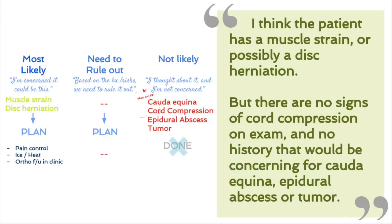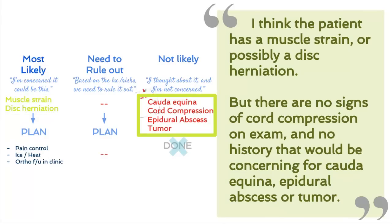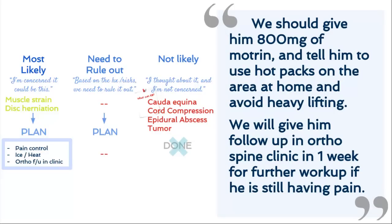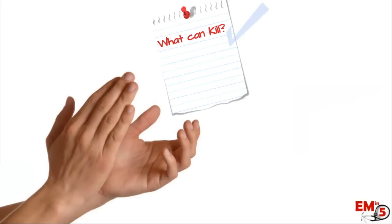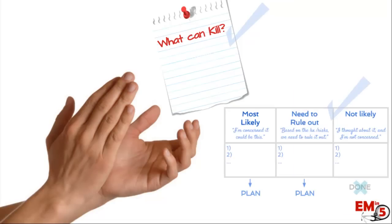We're ready to present: 'I think the patient probably has a muscle strain or possibly a disc herniation, but there are no signs of cord compression on exam, and there's nothing on the history concerning for cauda equina, epidural abscess, or tumor. For the plan, I think we should give him 800 milligrams of Motrin and follow-up in ortho-spine clinic in a week. He might need further workup or testing if he's still having pain.' We addressed everything on the 'what can kill' list and were very organized in our presentation.